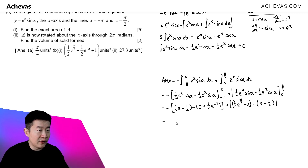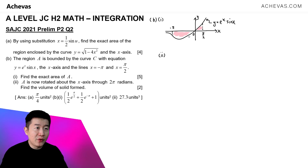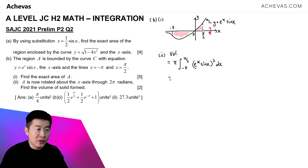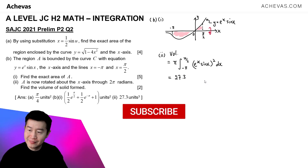Evaluating everything, the final answer for part B is ½e^(π/2) + ½e^(-π) + 1. For part C, we find the volume of the region from part B rotated by 2π about the x-axis. The volume is calculated as π times the integral from -π to π/2 of the curve expression squared. Since the question has no restriction on the form of the answer, we use a calculator to get 27.3 cubic units.